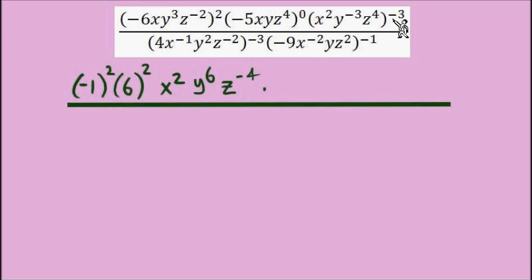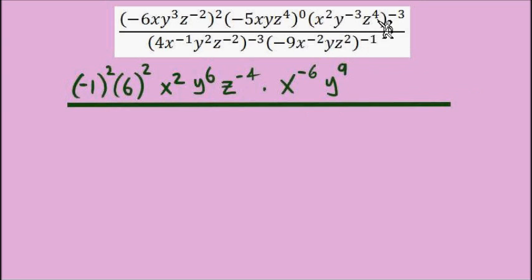Moving on to the next set of parentheses with an exponent of negative 3: working that in gives us x to the power of negative 6, y to the power of positive 9, and z to the power of negative 12. Our numerator is taken care of. I'm not afraid to do a lot of rewriting because there are many opportunities to make a mistake, and rewriting keeps me on track. Now let's take care of the denominator.